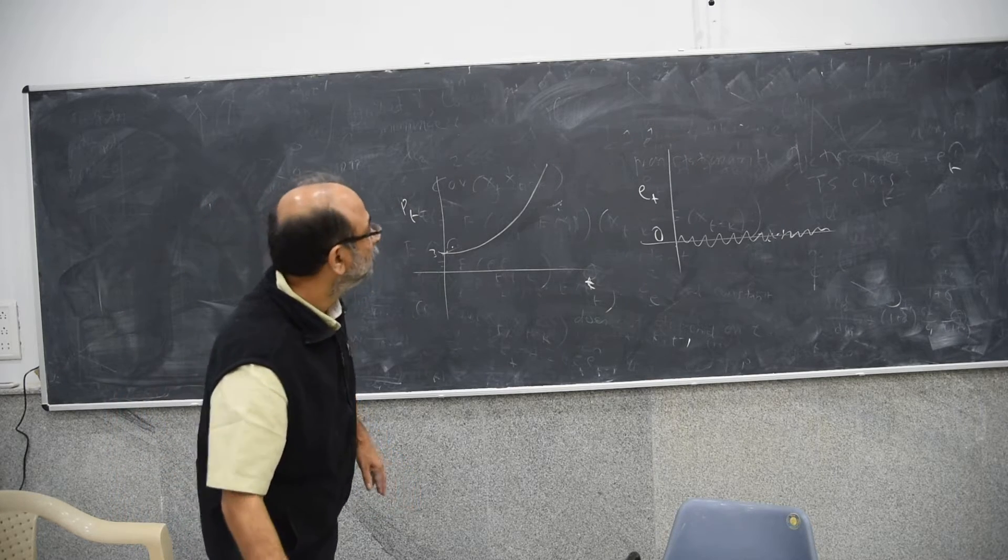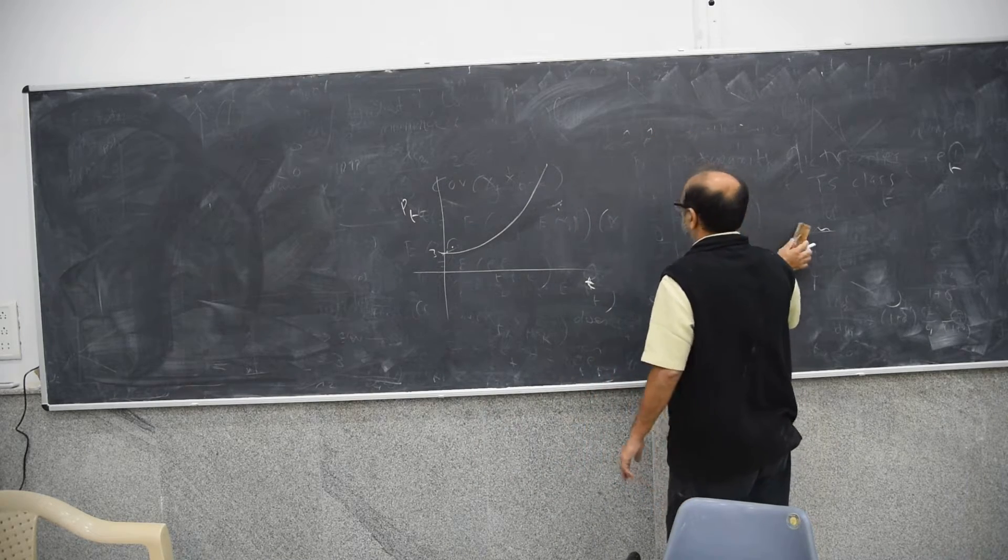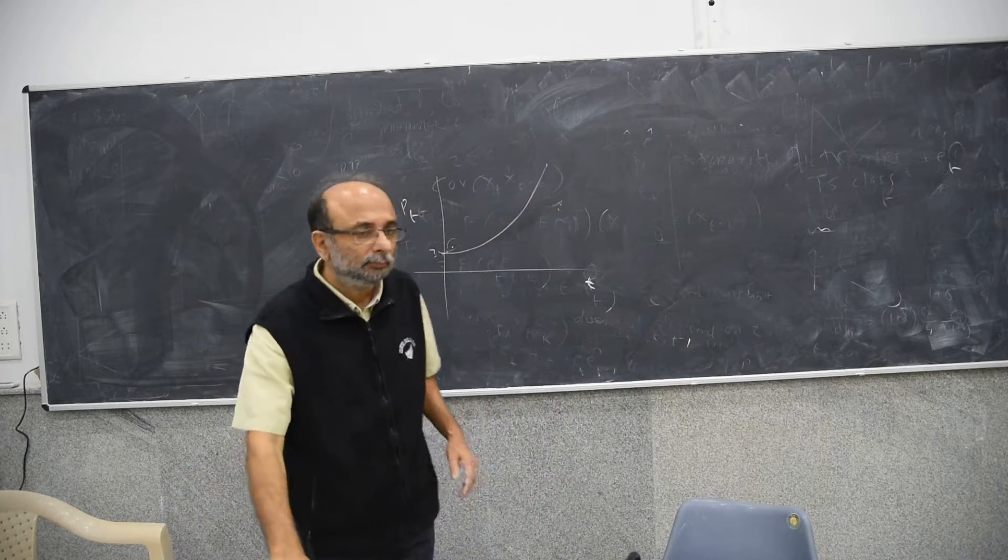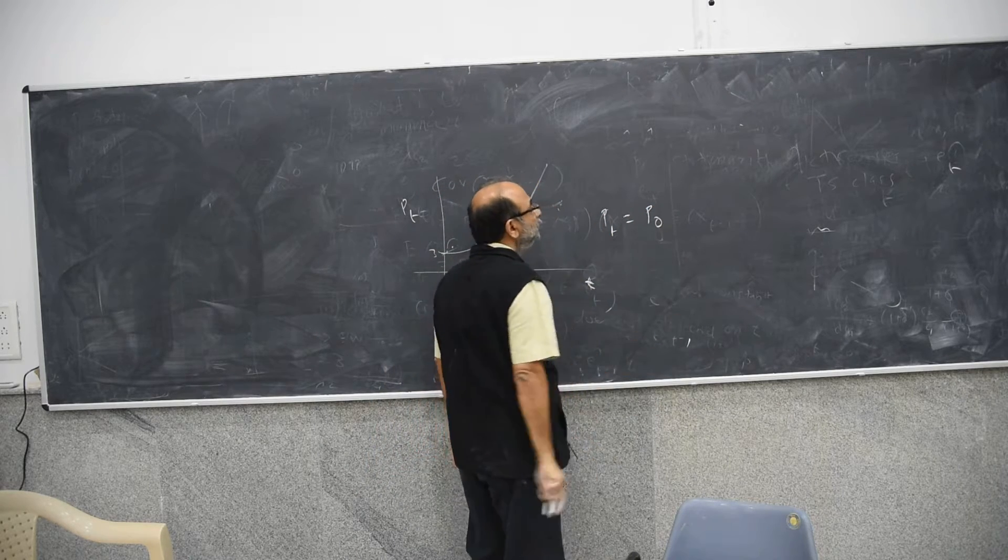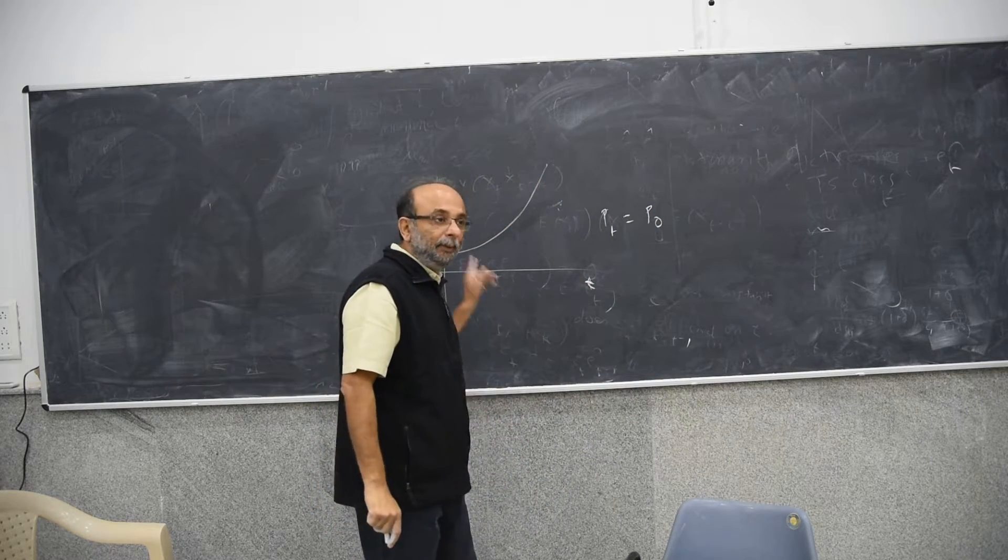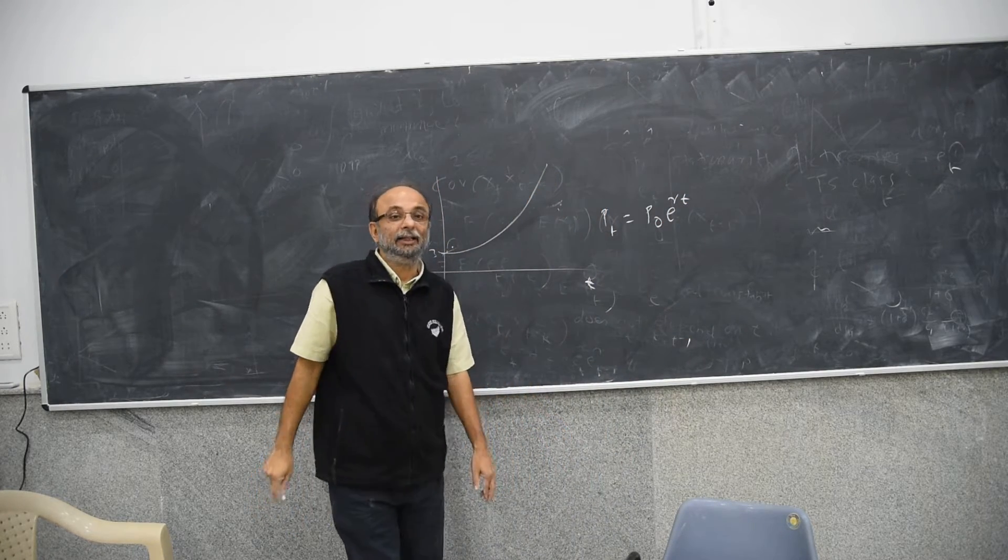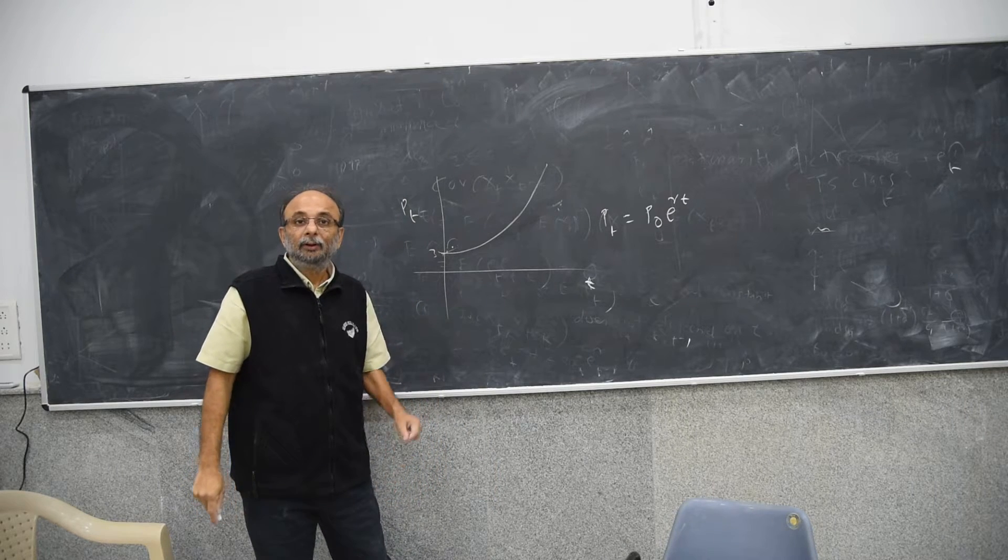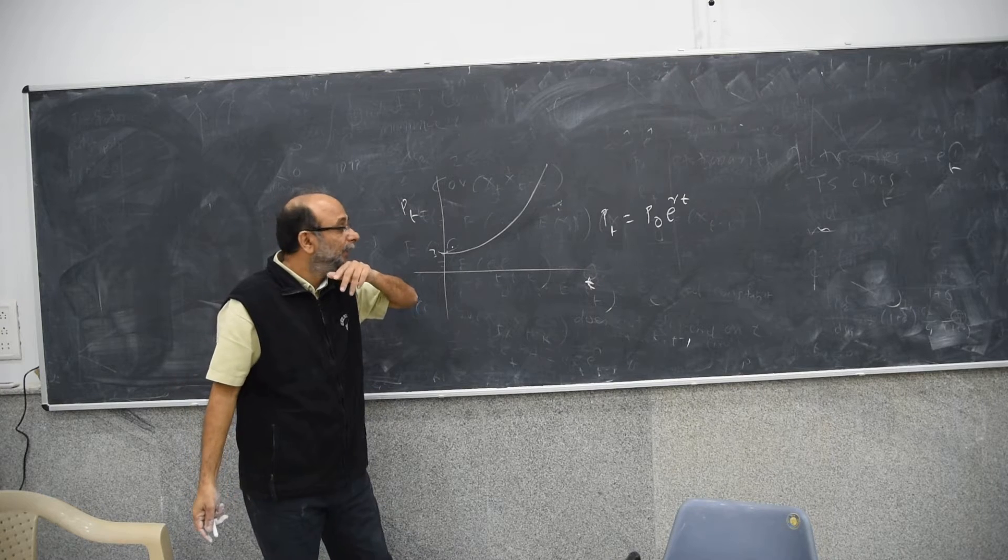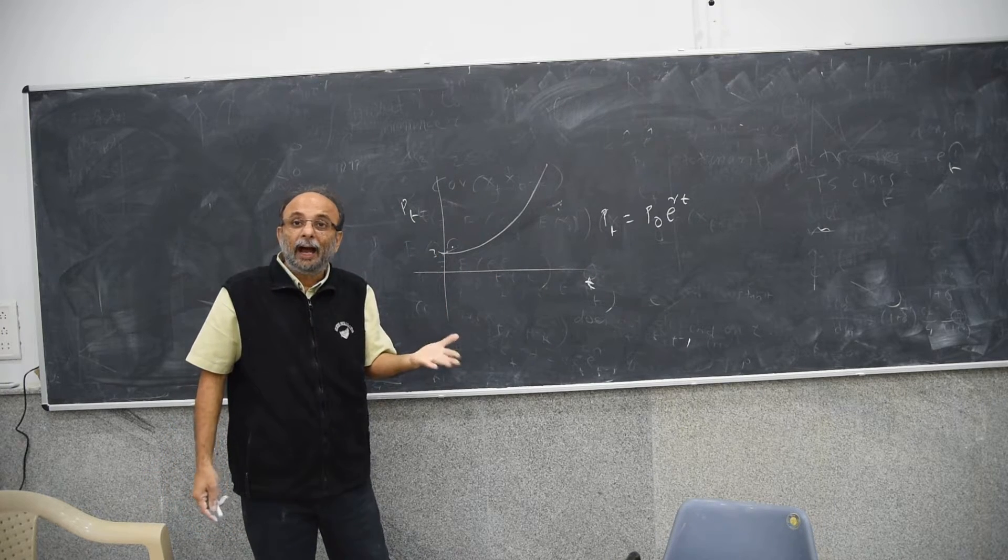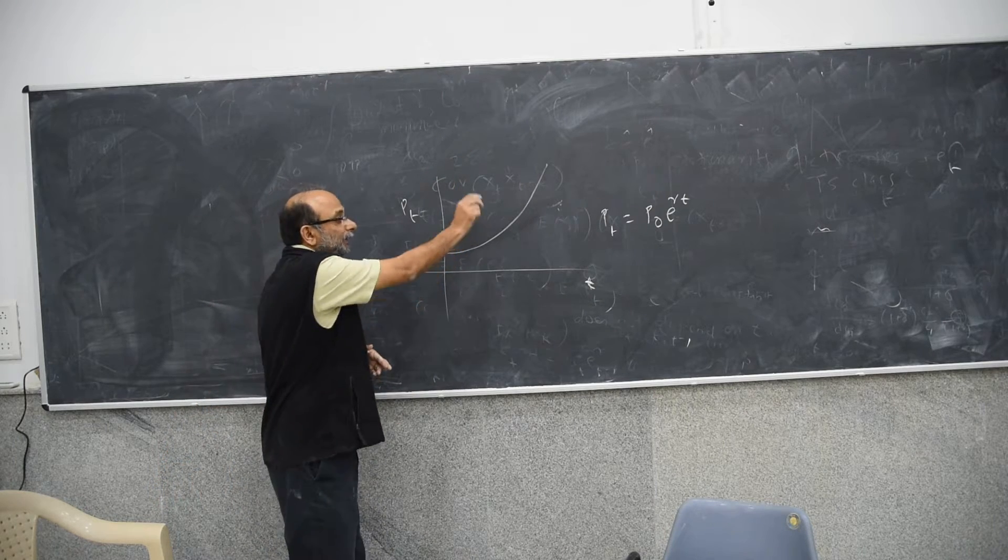How do you model such a process? You model such a process as Pt is initial population, P0, into e raised to rt, where t is the time period, r is the rate of growth, and e is the exponential, e raised to rt. So you will get something like this.